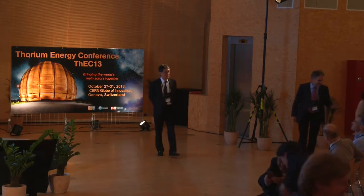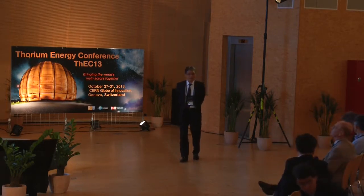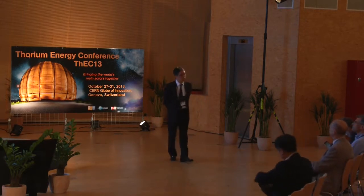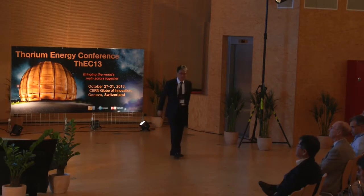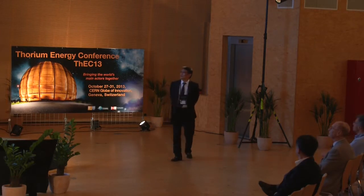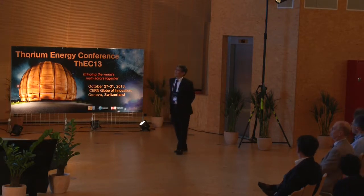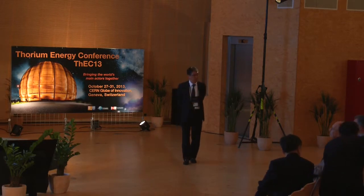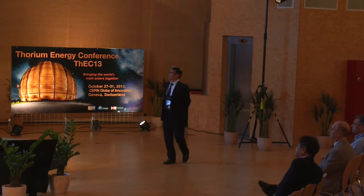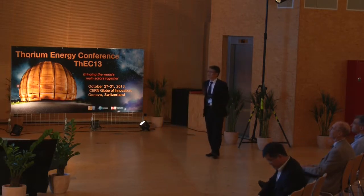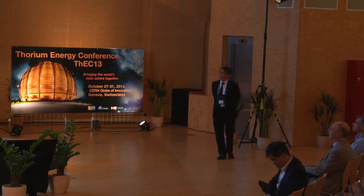I'm talking about this thorium-loaded ADS experiment carried out at our institute. We have a small critical assembly and two accelerators, including 14 MeV neutrons by DT reactions and 100 MeV protons. The composition of the ADS in our university involves the combined use of the Kyoto University critical assembly and the fixed-field alternating gradient, or FFAG, accelerator mentioned in a previous session.